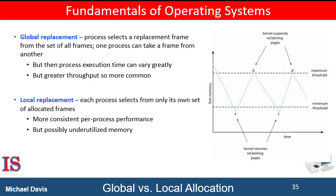Local replacement requires that each process select only from its own set of allocated frames. For example, consider an allocation scheme where we allow high-priority processes to select frames from low-priority processes for replacement. A process can select a replacement from among its own frames or the frames of any lower-priority process. This approach allows a high-priority process to increase its frame allocation at the expense of a low-priority process.